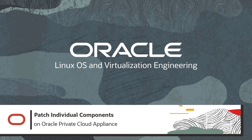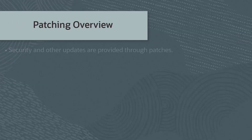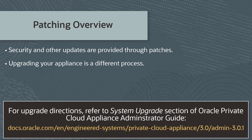In this video, I'll show you how to patch individual components on the Oracle Private Cloud Appliance. Security and other updates are provided through patches. Upgrading your appliance is a different process and uses a different set of commands than patching. For upgrade directions, refer to the System Upgrades section of the Oracle Private Cloud Appliance Administrator Guide at the URL shown.